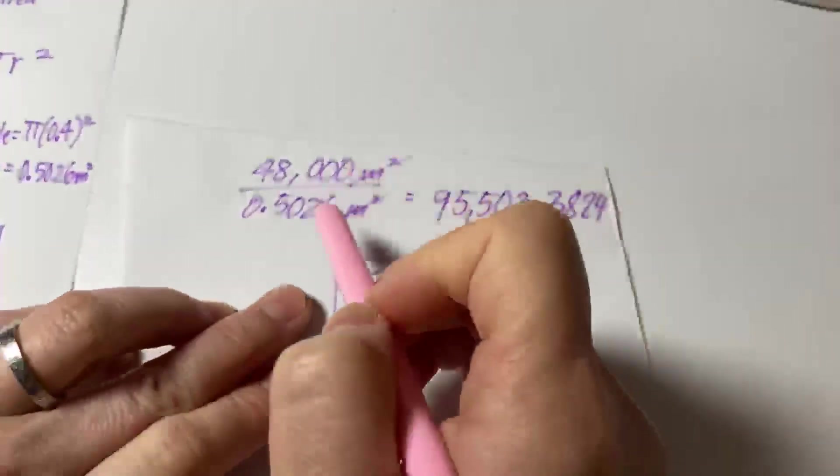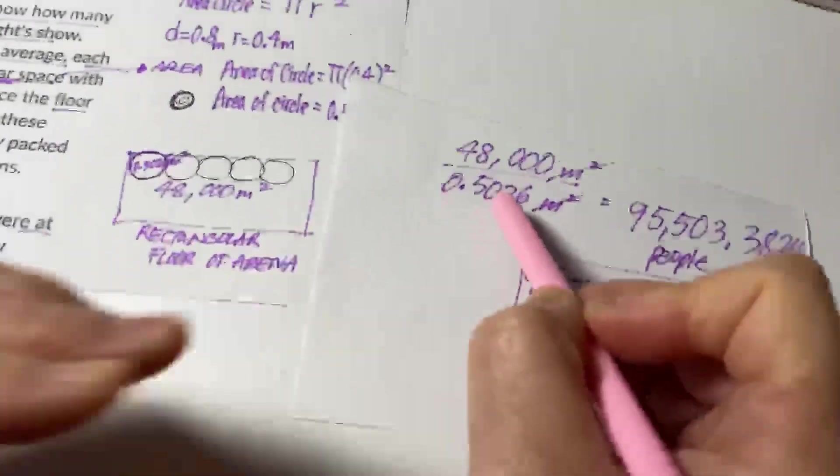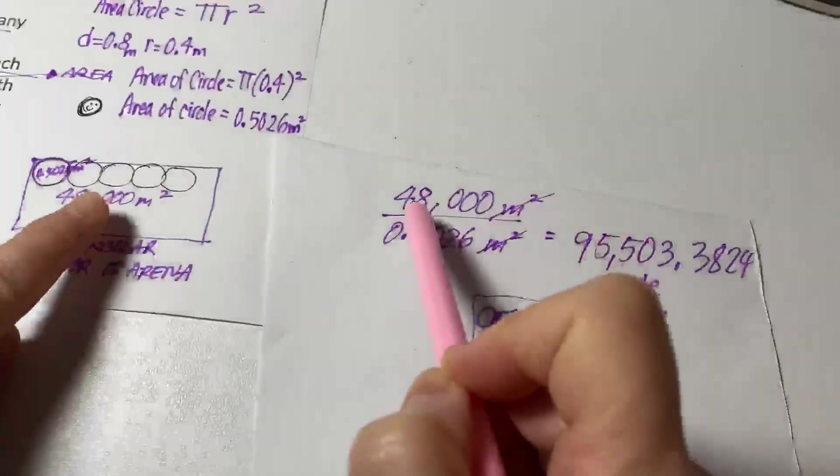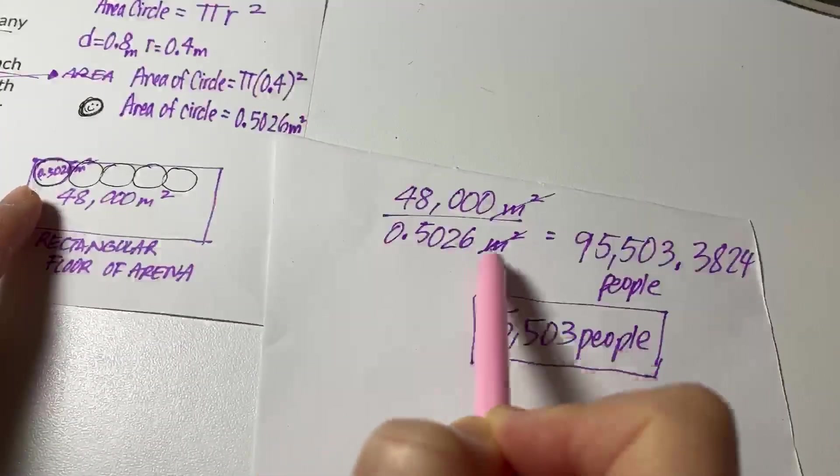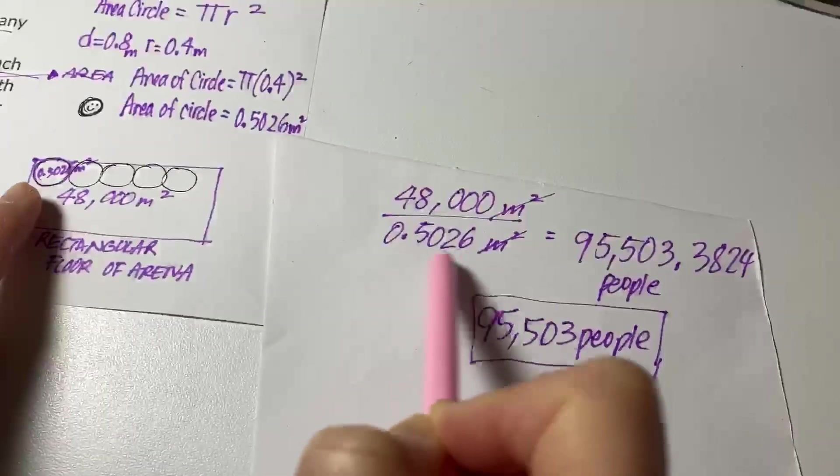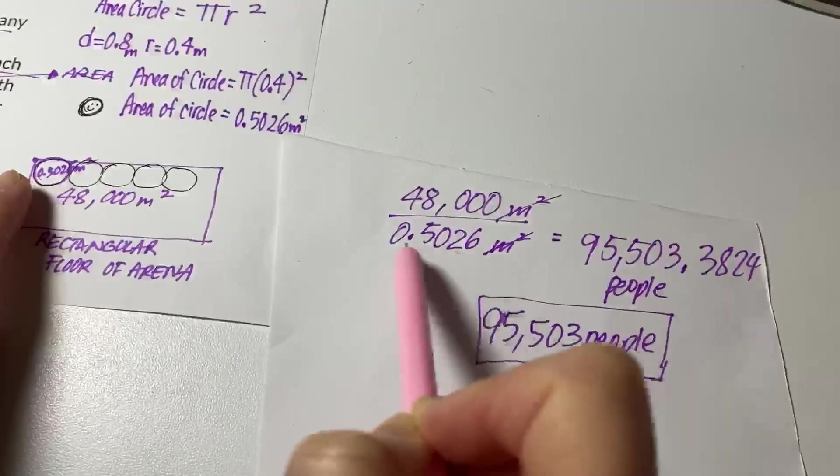What we're going to do is take the area of the rectangular floor of the arena and divide that by how much space each of these people took. And each person took this amount of space.